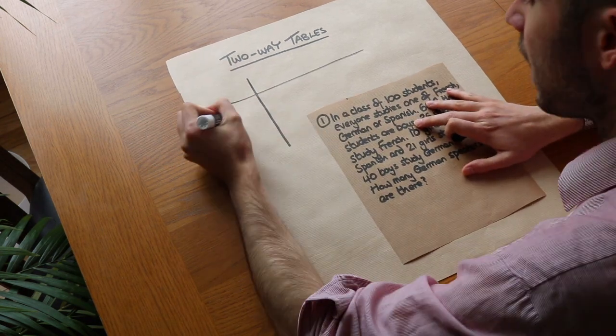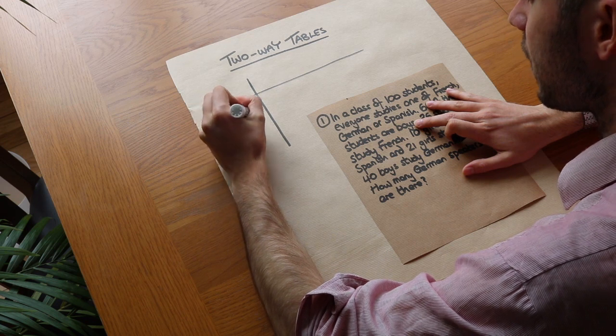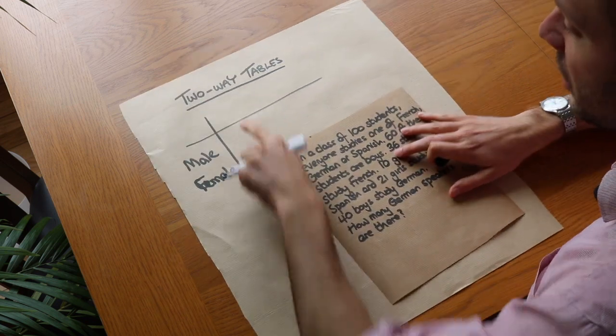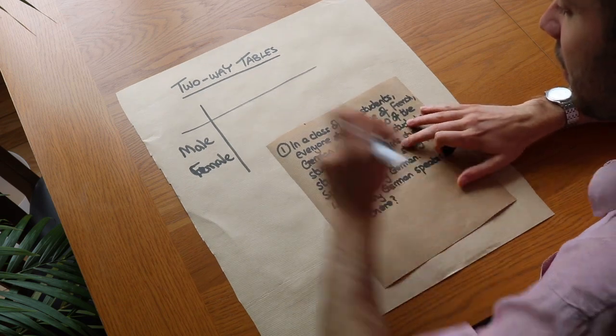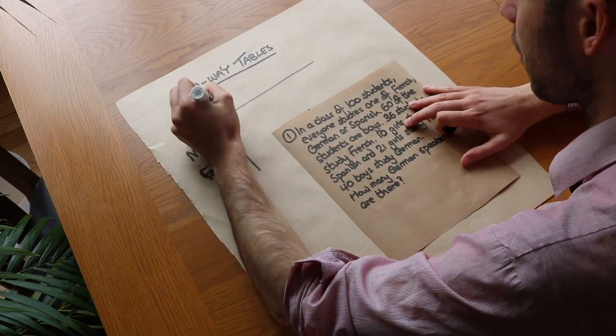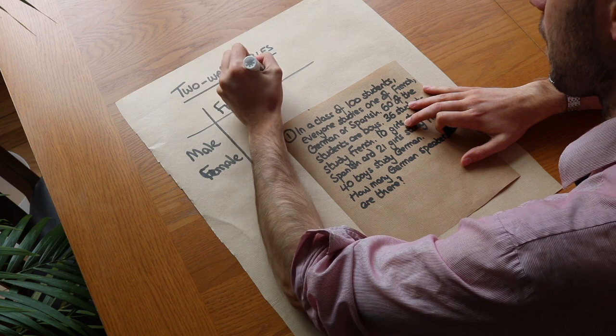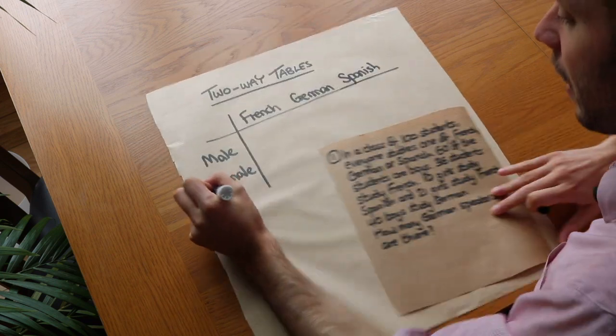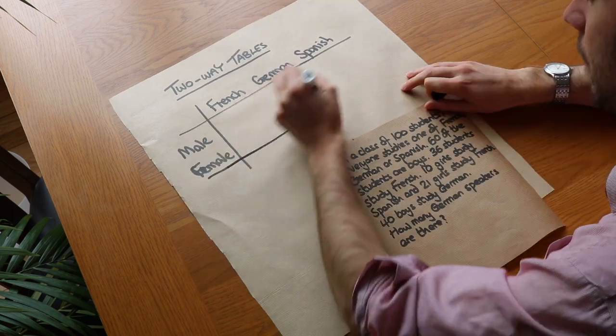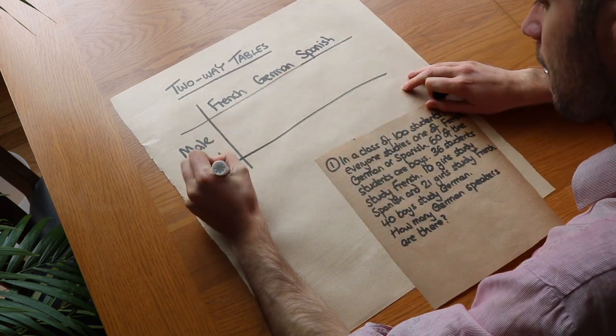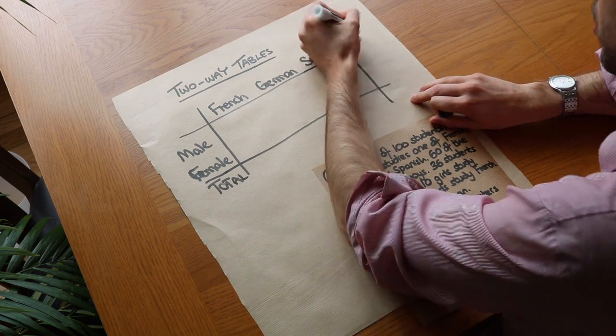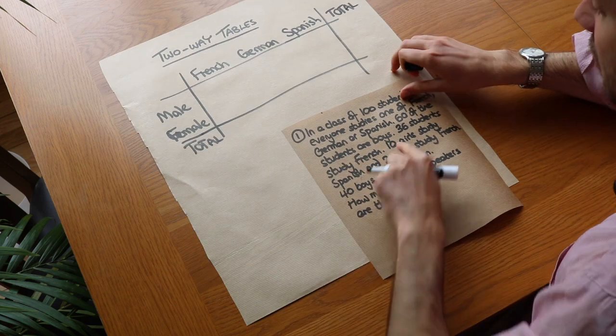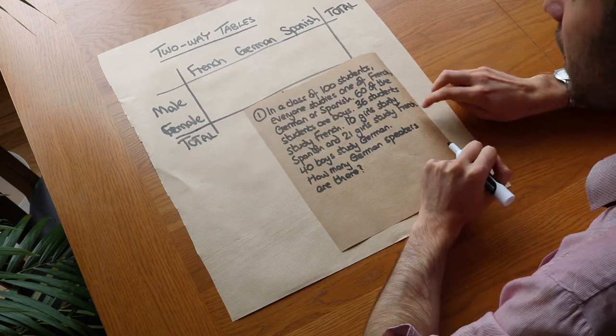And have say male and female down here as the rows or it could be the columns and then you would have the other variable in this case the subject across the top so French, German, Spanish and we'd also want to have a total row and we also want to have a total column and once we've done that we can use this data here to completely fill in our table.